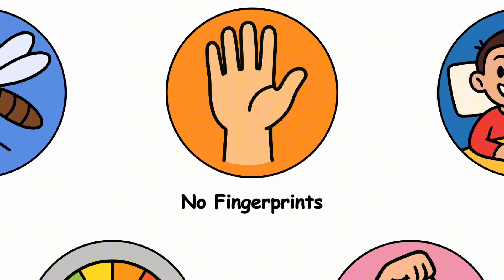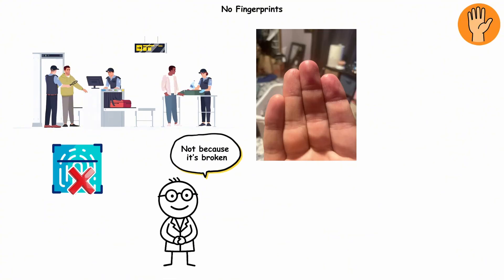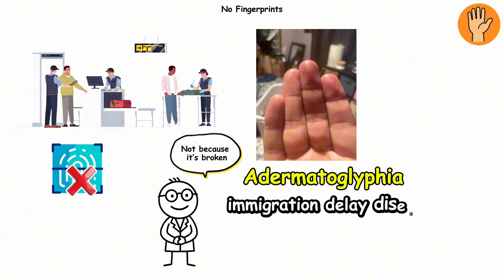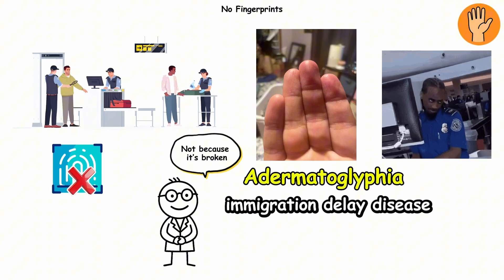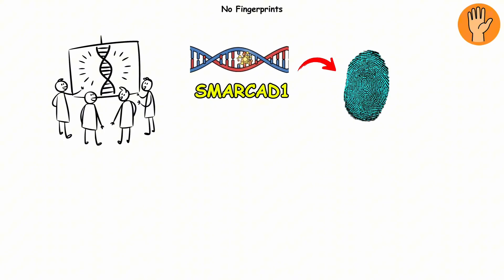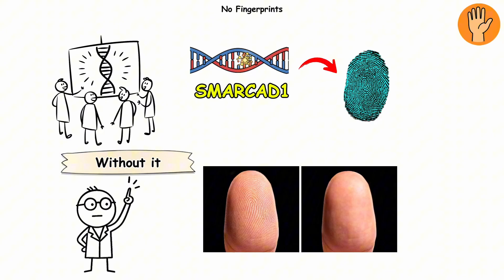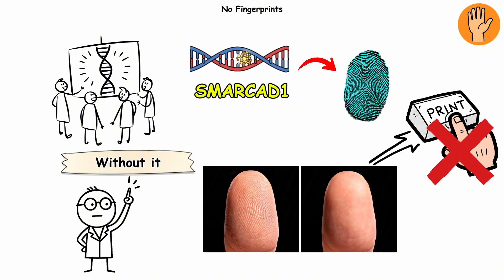No fingerprints. Imagine going through airport security and the fingerprint scanner just doesn't work. Not because it's broken, but because you don't have fingerprints. That's adermatoglyphia, also known as the immigration delay disease, because border agents really don't love when you're invisible to them. This rare genetic condition is caused by a mutation in a gene called SMARCAD1, which plays a role in how your skin forms those signature ridges. Without it, your fingertips are smooth as glass. No whirls. No loops. Nothing. It's like nature forgot to press print on the final layer.